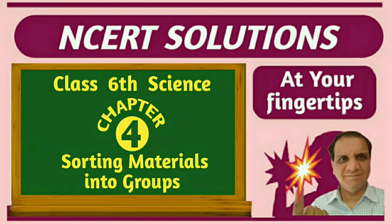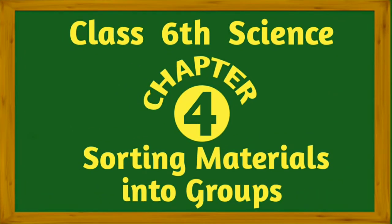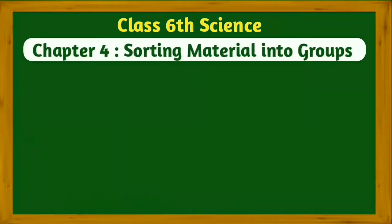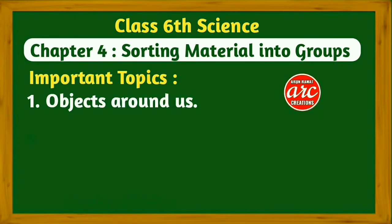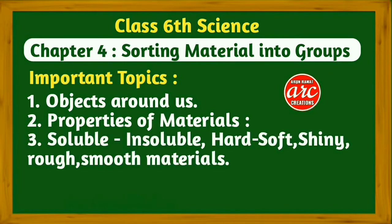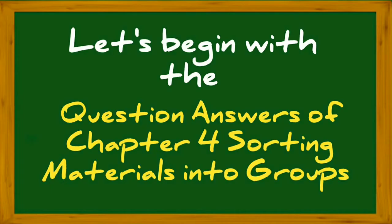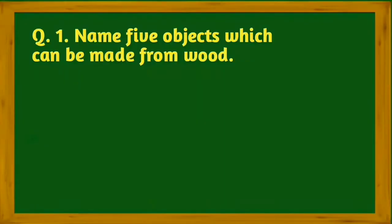NCERT solutions at your fingertips. Today we are going to do NCERT solution for Class 6 Science, Chapter 4: Sorting Materials into Groups. Important topics of the chapter are objects around us, properties of materials, soluble and insoluble, hard and soft, shiny and rough, smooth materials, opaque, transparent, and translucent materials. Let's begin with the question answers of Chapter 4.